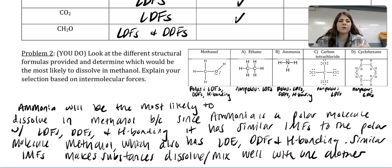You can see under each of the molecules I wrote the polarity for them and then the IMFs. Methanol was polar with LDFs, DDFs, and hydrogen bonding. A, C, and D are all non-polar with only LDFs, while B, ammonia, was our polar molecule with LDFs, DDFs, and H bonding.